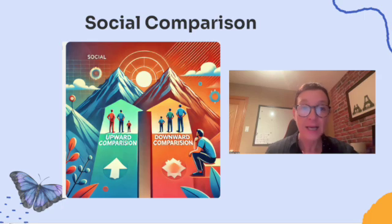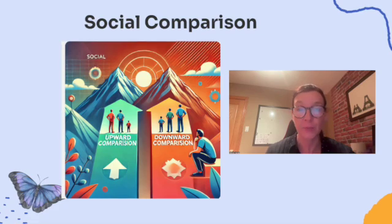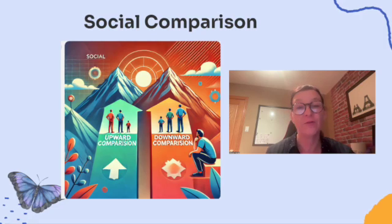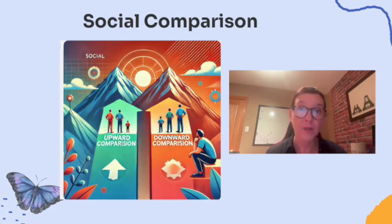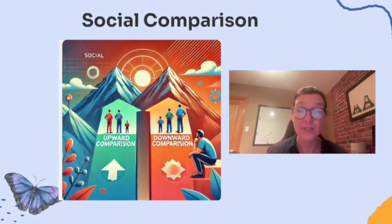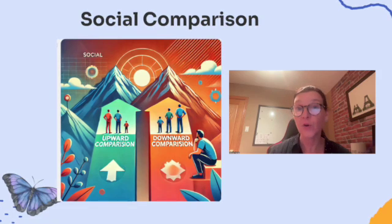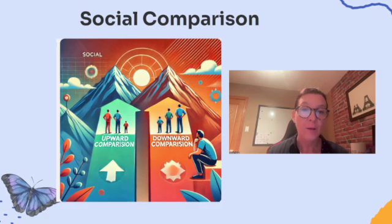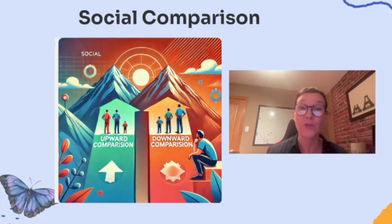Now let's dive into the concept of social comparison. It's a psychological process we all engage in — it explains how we evaluate ourselves by looking at others and what that means for our behavior and mental health. Social comparison is the process of evaluating yourself by comparing your abilities, achievements, or situations to those of other people. There are two main types: upward comparison and downward comparison. Upward comparison happens when you compare yourself to someone you see as better off — like admiring a classmate who gets excellent grades or a co-worker who gets a promotion. This can be motivating, but it can also make you feel inadequate if you focus too much on what you're lacking.